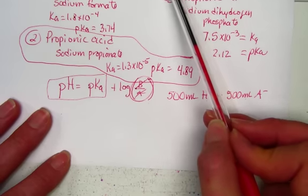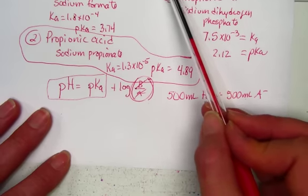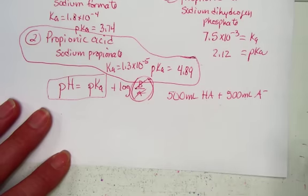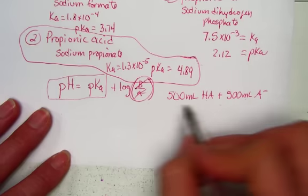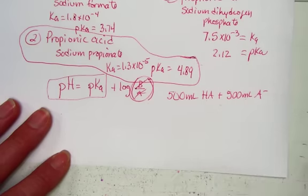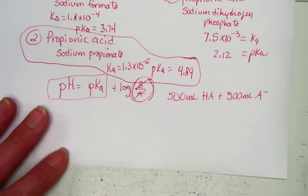If they were different, we'd have to think about molarity, but here they're the same. So 500 mL of each gives us 1,000 mL total, and we've delivered the same number of moles of acid and conjugate base.